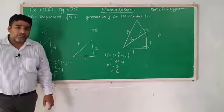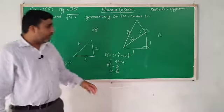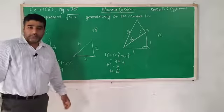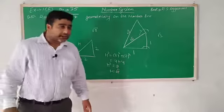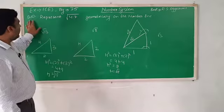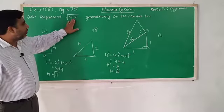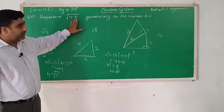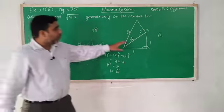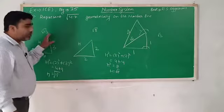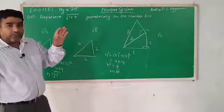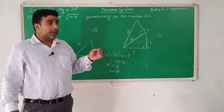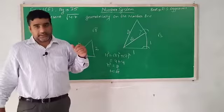So we have seen how to make root 2, root 3, root 8, root 13. But now our question is Question Number 5 — represent under root 4.7. Look at root 2, root 3, root 8, root 13, root 4, 5, 6, 7 — none of them have a decimal. So how do we do a question with a decimal?